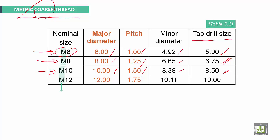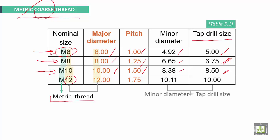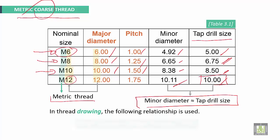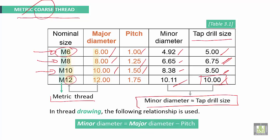In the designation, 'M' stands for metric thread and the number represents the major diameter or nominal size. Minor diameter and tap drill size dimensions will be almost the same — approximately 10 to 10.11. This should be a standard size. In 3D drawing, the following relationship is used: minor diameter equals major diameter minus the pitch.